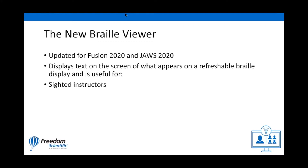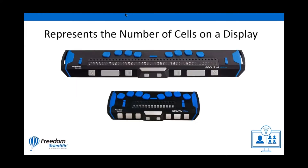This is very useful for sighted instructors, parents, script writers, and testers who do not read Braille or have limited or no access to an actual Braille device. The Braille Viewer represents the number of cells on the currently connected Braille display. If a physical display is not in use, the Braille Viewer defaults to representing a 40-cell display, including status cells.